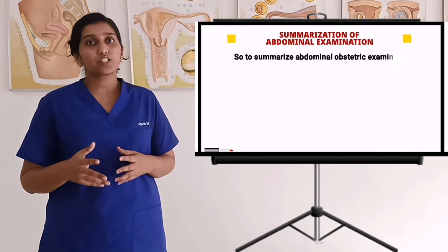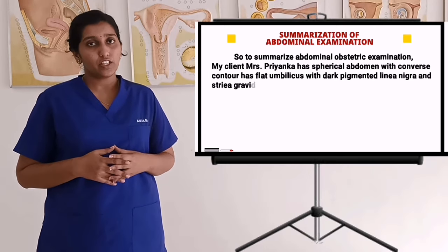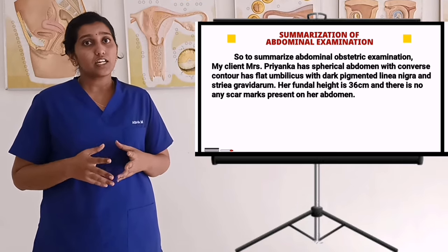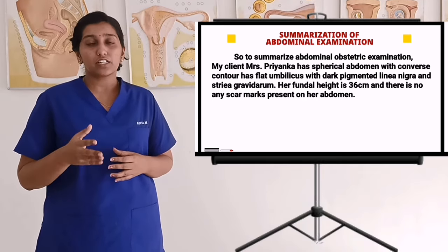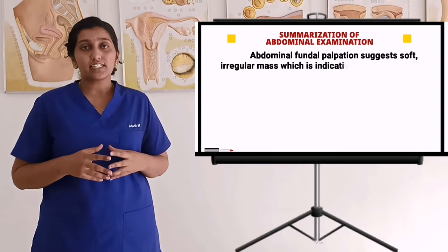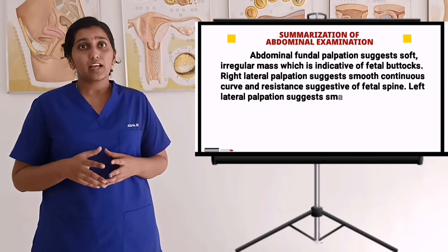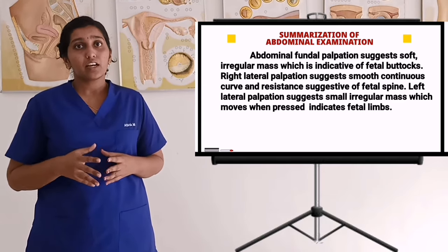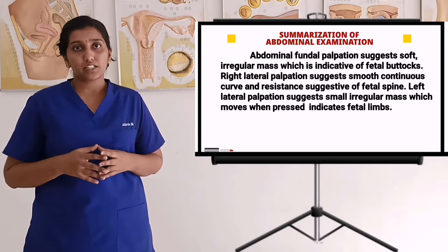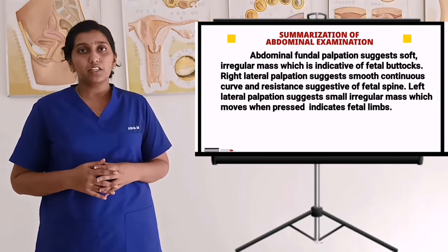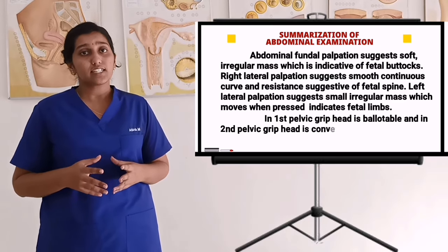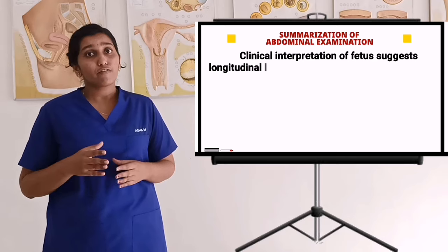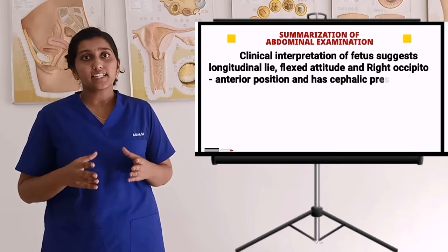To summarize the abdominal obstetric examination: Mrs. Priyanka has a spherical abdomen with convex contour, flat umbilicus with dark pigmentation, linea nigra, and striae gravidarum. Her fundal height is 36 cm and there are no scar marks on her abdomen. Abdominal fundal palpation suggests a soft, irregular mass indicative of fetal buttocks. Right lateral palpation suggests a smooth, continuous curve and resistance suggestive of fetal spine. Left lateral palpation suggests an irregular mass which moves when pressed, indicative of fetal extremities. Head is palpable on first pelvic grip and on second pelvic grip the head is converging, suggesting non-engagement of the head. Clinical interpretation suggests longitudinal lie, flexed attitude, right occipito-anterior position, and cephalic presentation.